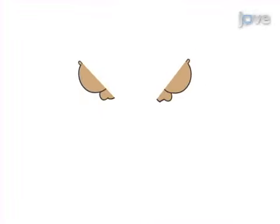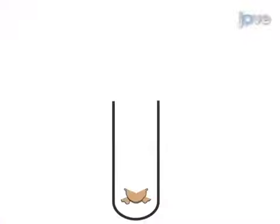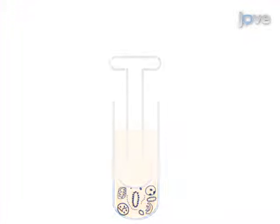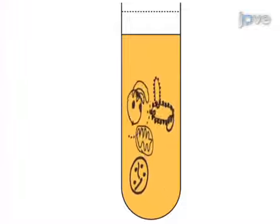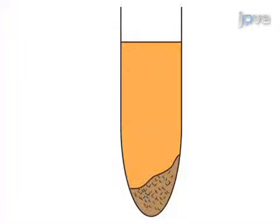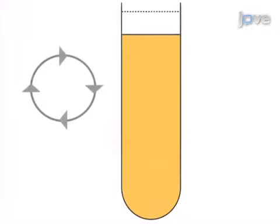This is accomplished by first dissecting the mouse brain, which is then homogenized in a specific buffer using a Dounce homogenizer. The resulting homogenate is centrifuged at low speed to remove nuclei, unlysed cells, and debris.